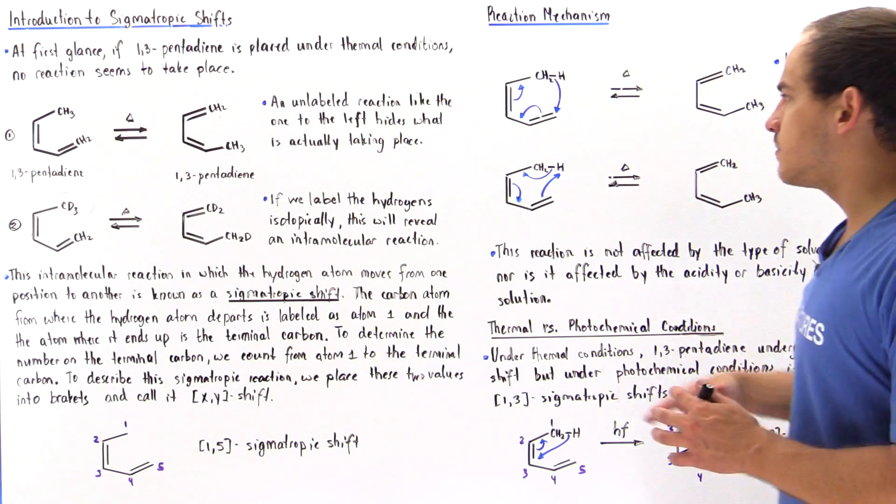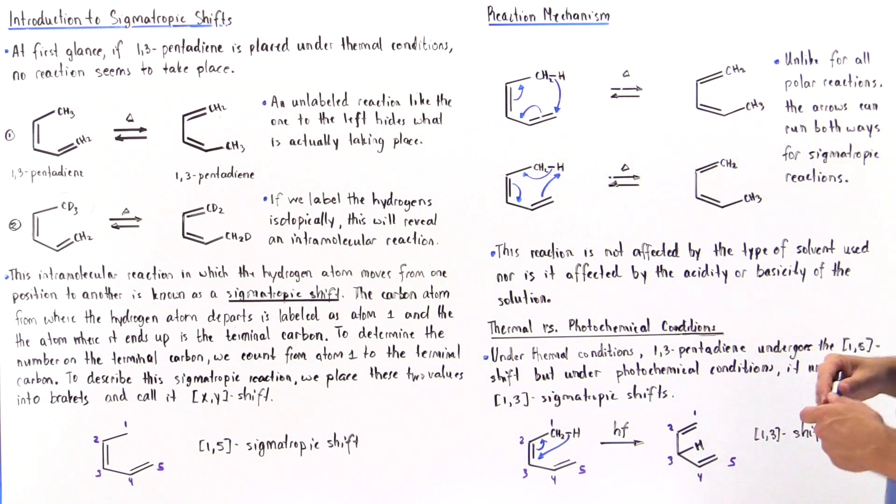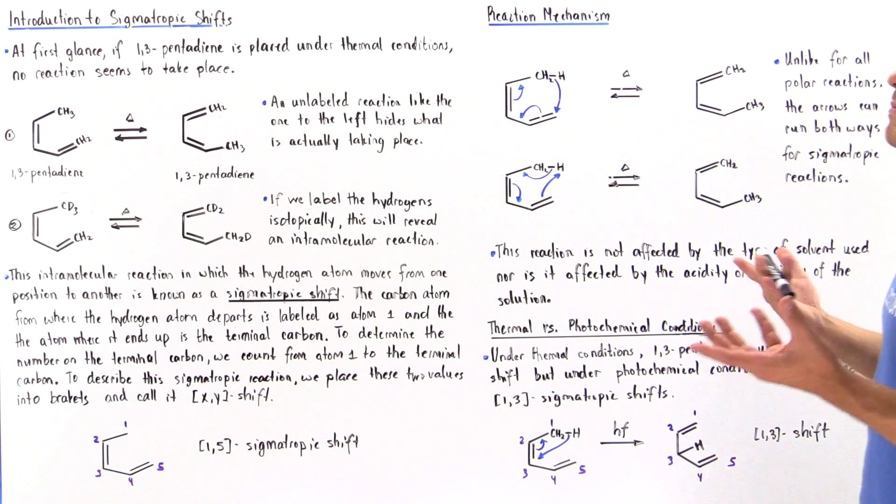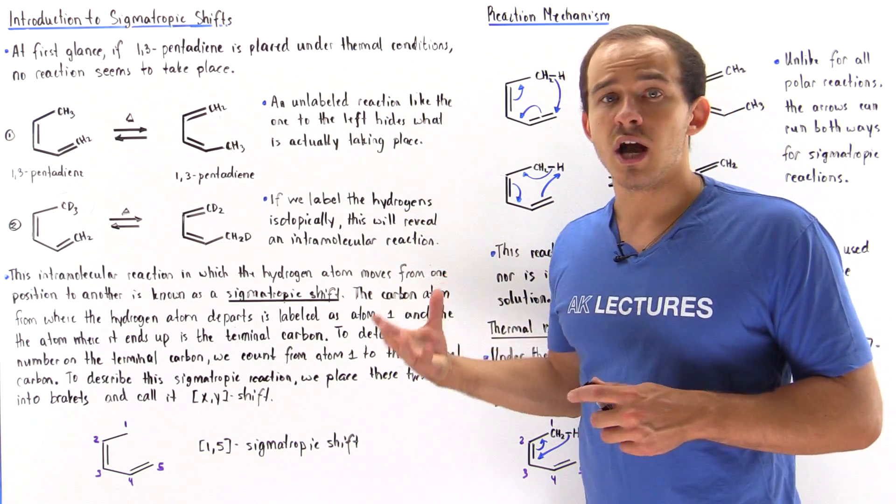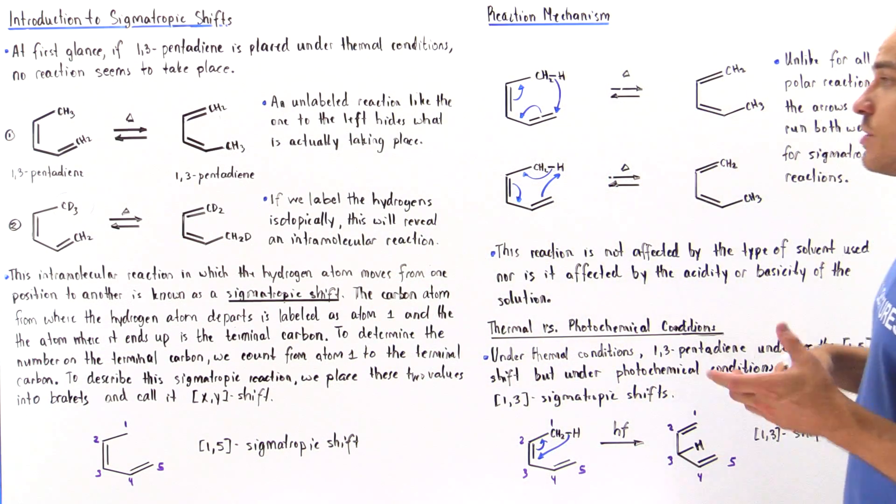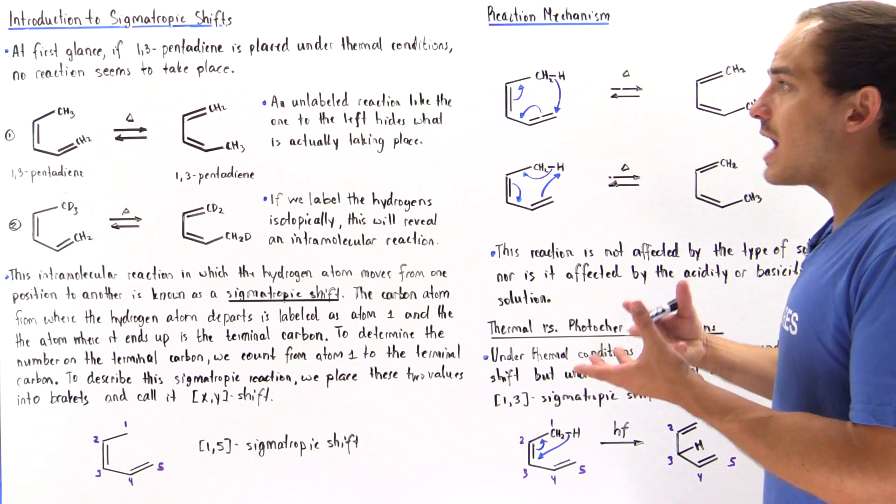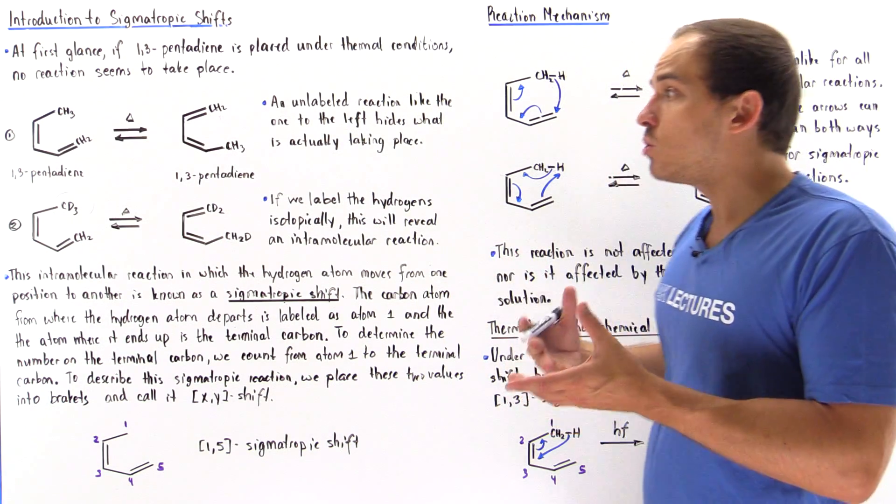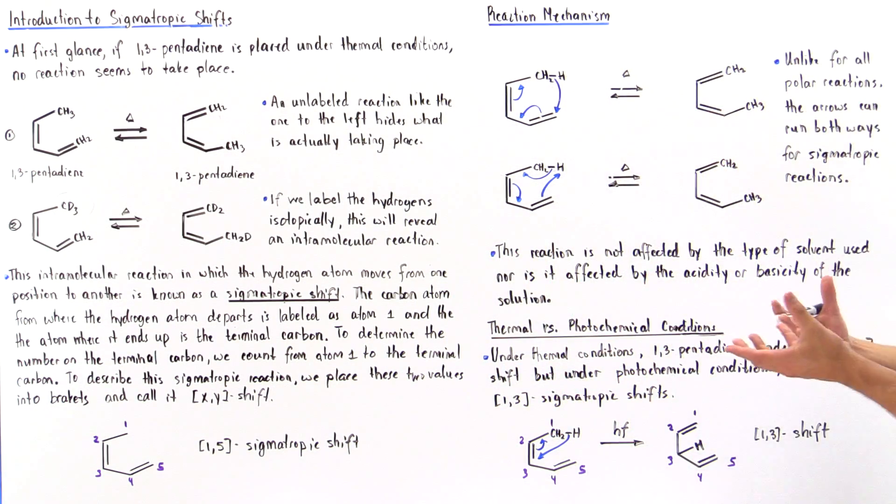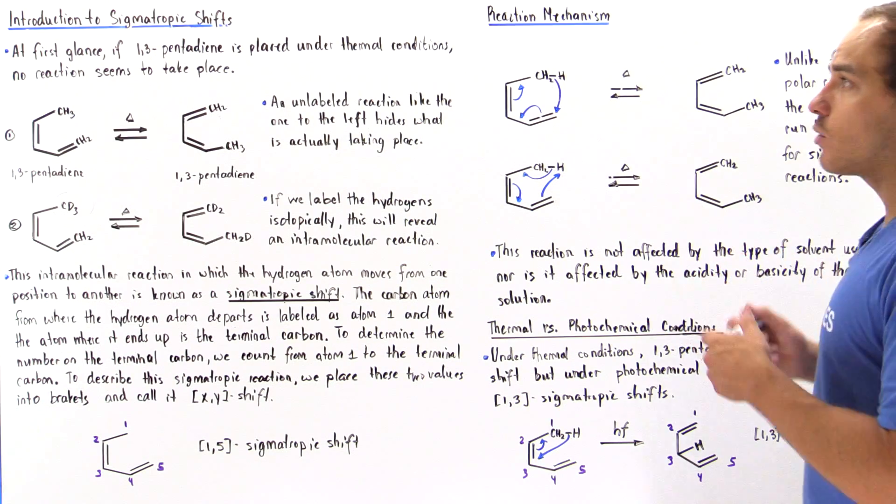So the arrow formalism is correct in both cases. And that's because our sigmatropic shift is not really a polar reaction. So this basically implies that because our reaction is not a polar reaction, we don't form any type of polar intermediate within our reaction.